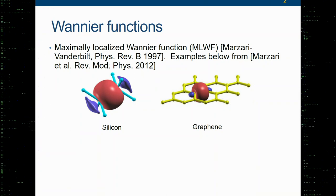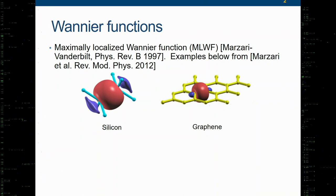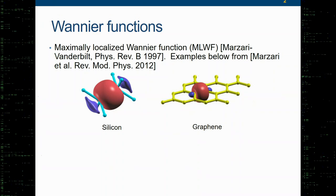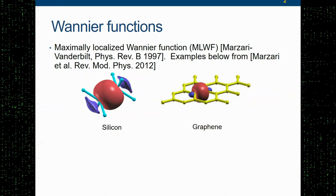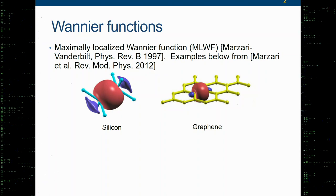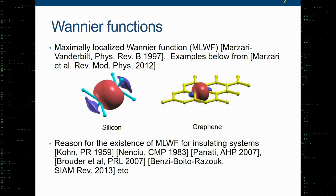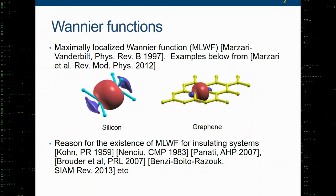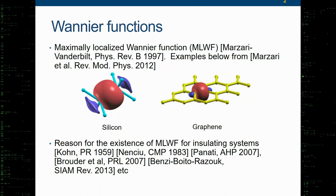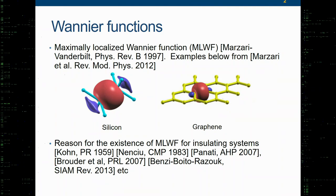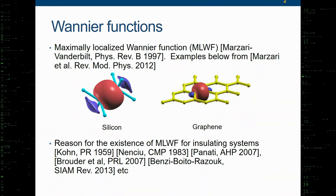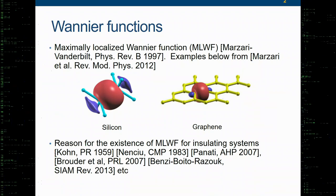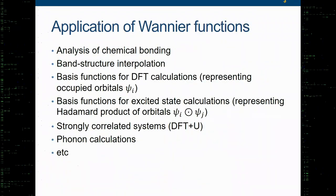First of all, I don't think to this audience I need to talk much about the Wannier functions. The Mazzari-Vanderbilt construction for the MLWF has become the standard. Here are two examples, one from silicon, one from graphene. There is a lot of mathematical reasoning for the existence of exponentially localized Wannier functions, at least for insulating systems, but more recently extending to the understanding of Wannier functions for topological materials, which I won't discuss today.